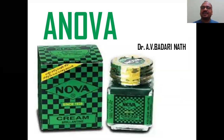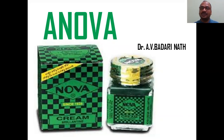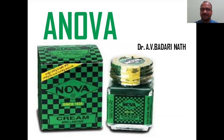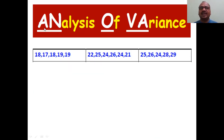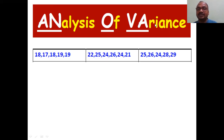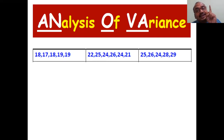Hi students, I'm Dr. Vadrinath and we are studying statistics. In this session we will see ANOVA. Note that ANOVA is not the same as the Vaseline cream brand — this ANOVA comes from statistics. ANOVA stands for Analysis of Variance. You analyze whether there is any variance between groups. I have three groups here — group one, group two, group three — and I calculate the variance between them using ANOVA.